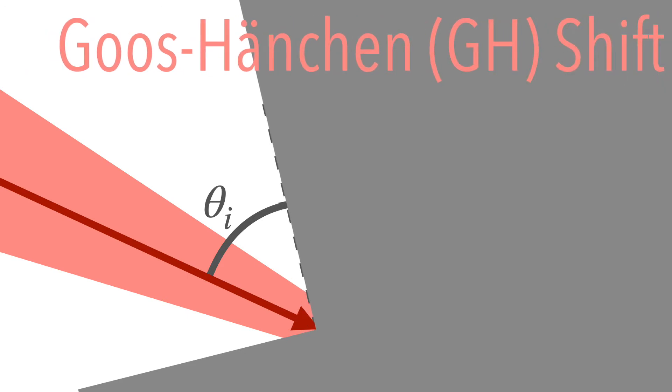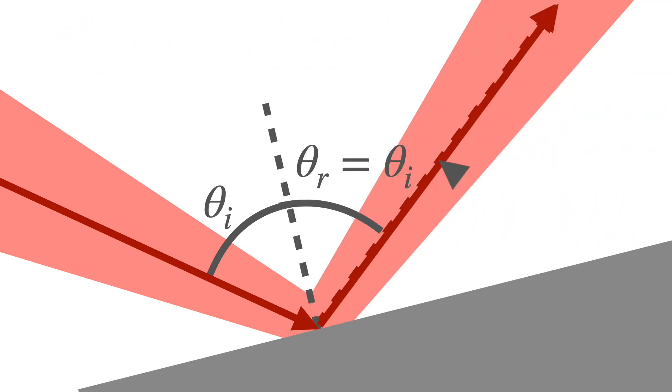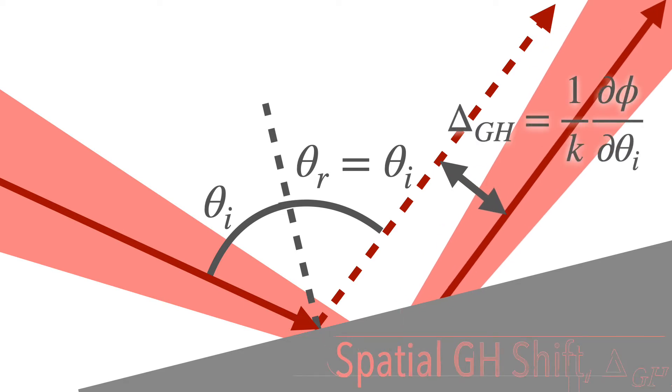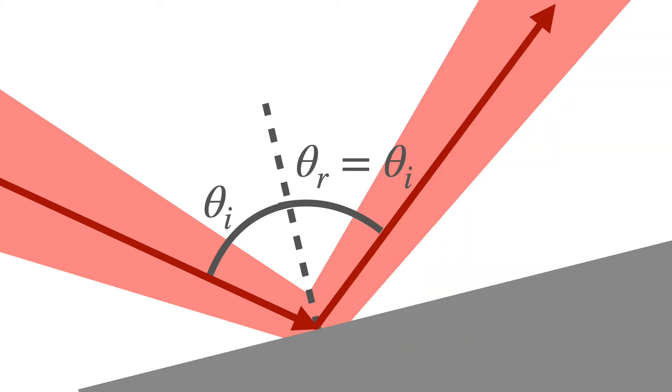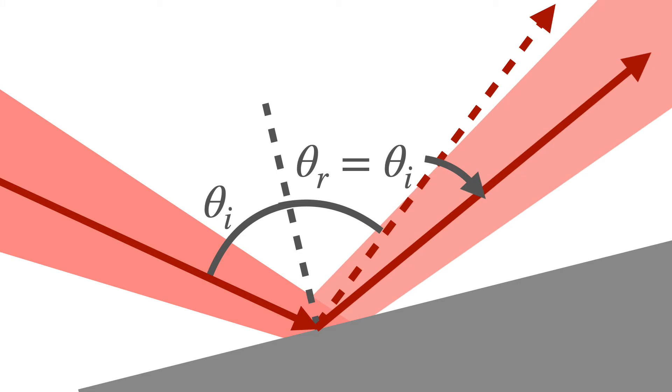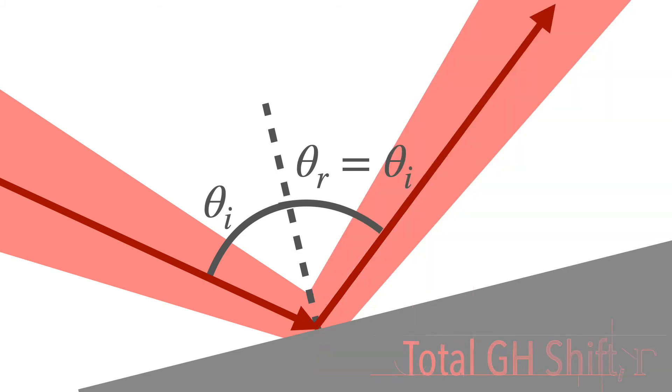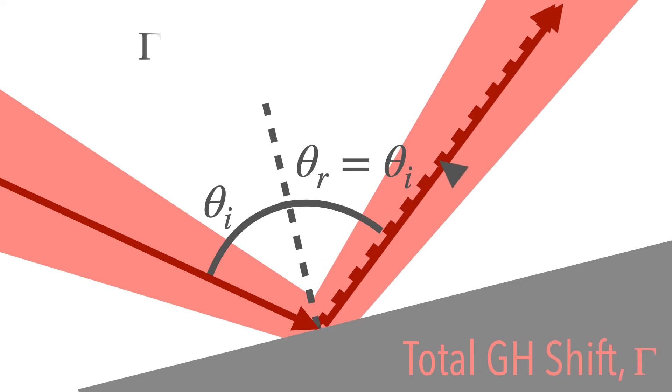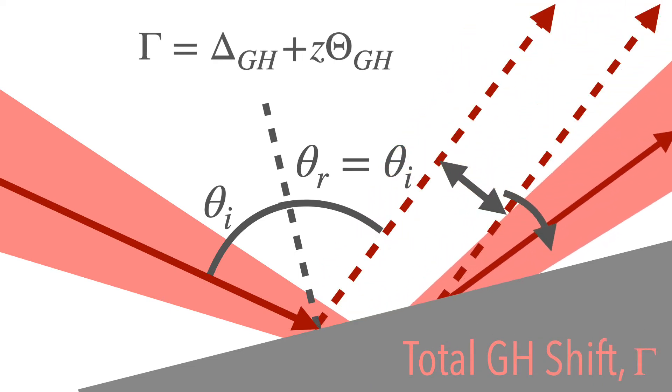Here, the reflected beam could experience lateral displacement, called spatial Goos-Hänchen shift, or it could undergo deflection, called angular Goos-Hänchen shift. The total Goos-Hänchen shift is then given by the linear combination of the spatial and angular Goos-Hänchen shift.